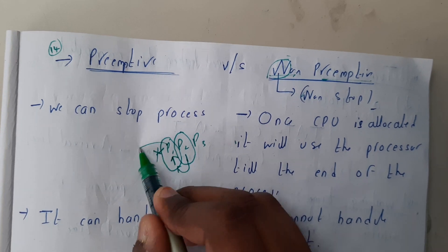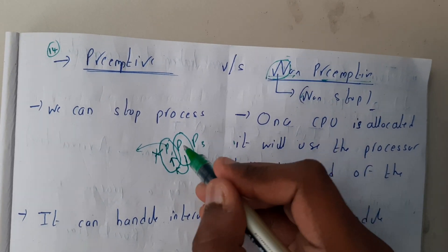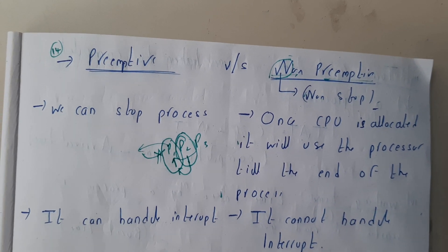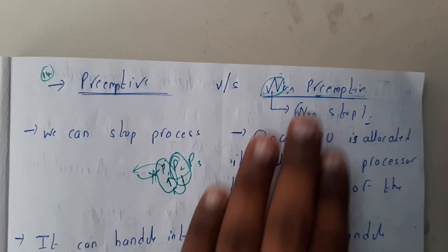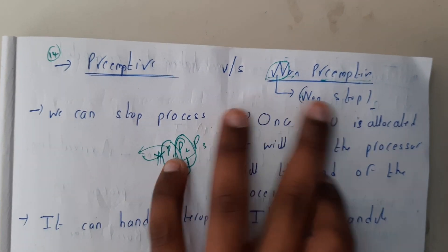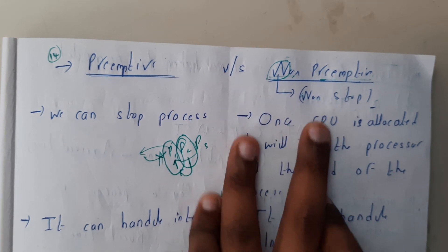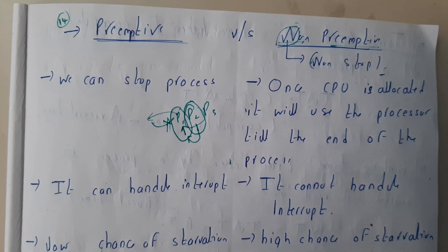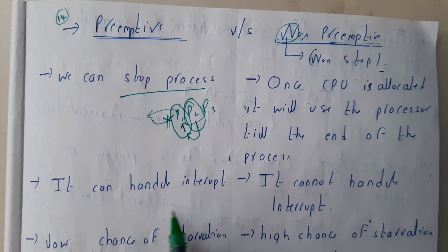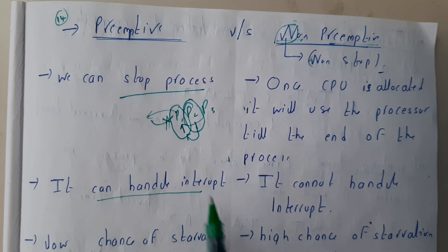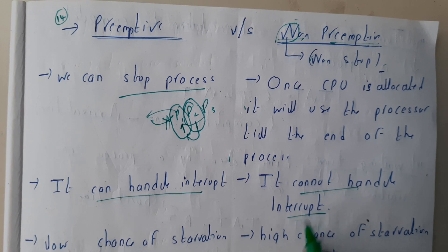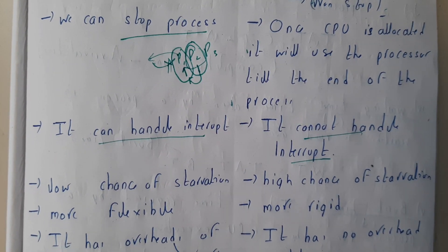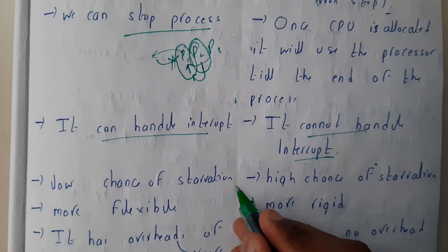In preemptive, we can stop a process — once a new process comes, the current one is pushed back and the new process executes, then it returns. So preemptive means it will stop, non-preemptive means it will not stop. Preemptive can handle interrupts, whereas non-preemptive will not stop so it cannot handle interrupts.